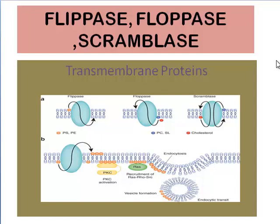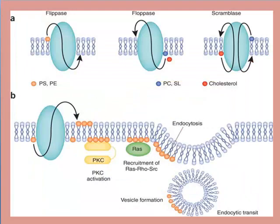You can see that the membrane contains three components: carbohydrates, proteins, and lipids. Now, you can see in this figure what floppases are doing — the protein on the outer side is moving towards the lower side. This is the function of floppases.